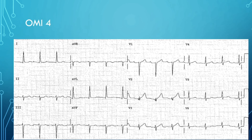Now we should be getting the hang of it. Look around and see if you notice anything. You can see some minor depression in the inferior leads, and there are hyper-acute T waves in the precordial leads V2 and V3 — very small QRS with a T wave that juts off and is much larger than the QRS. V3 is also becoming a little hyper-acute.